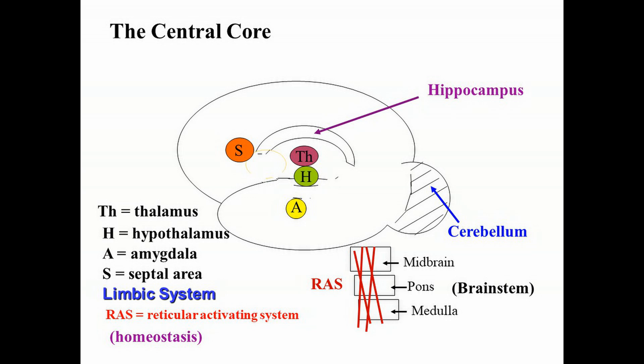Beneath the thalamus, you have the hypothalamus. Hypo literally means beneath, so you can guess where it's located. The hypothalamus is involved in a variety of behaviors, but right now I want you to associate it with the word homeostasis — maintaining an optimal level of any physiological requirement, such as optimal levels of fluids, nutrients, and body temperature. We'll come back to the hypothalamus later when we talk about motivation.